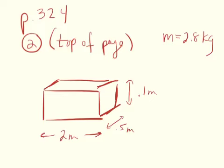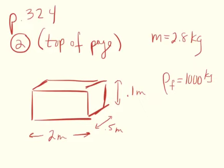From the other day, our ultimate conclusion was this: if the density of the object is greater than the fluid it's in, it will sink. We know the density of water from a table — the density of water, the fluid here, is 1,000 kilograms per cubic meter.